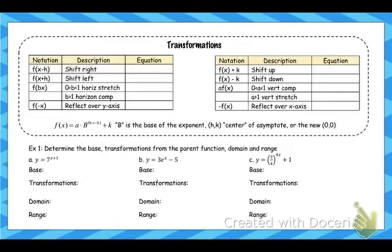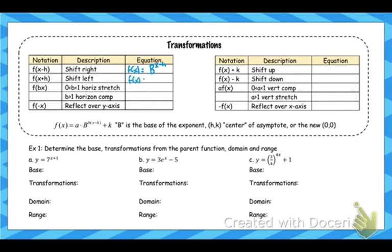So now let's look at all of our transformations. Anything that's happening in the exponent is going to be horizontal. Anything that happens outside of the base is vertical. A shift right would be base to the x minus H in the exponent. I'm going to use a capital B for base, since lowercase b we've used all year for horizontal stretch and compression. So x minus H in the exponent is a shift right; x plus H is a shift left. Horizontal compression is also in the exponent. A negative in the exponent is a reflection over the y-axis.